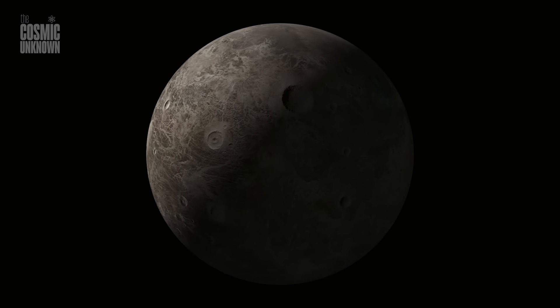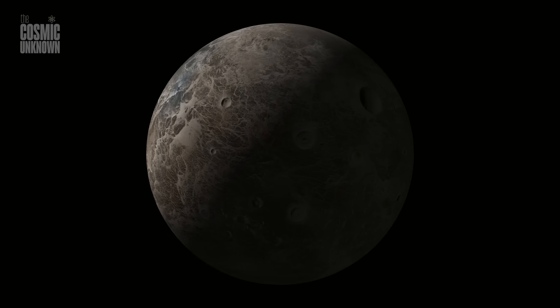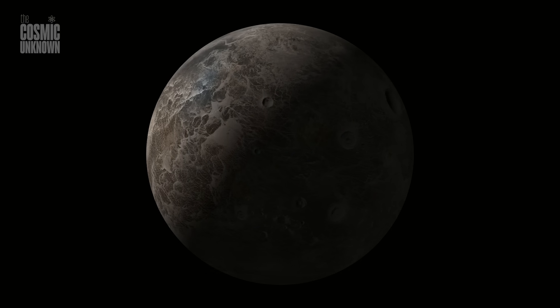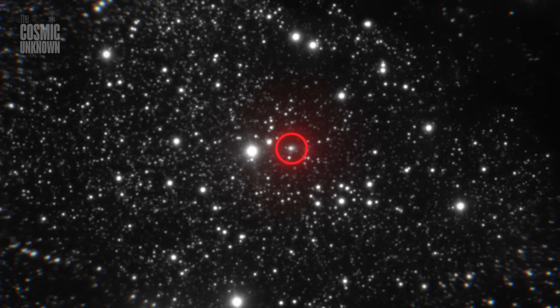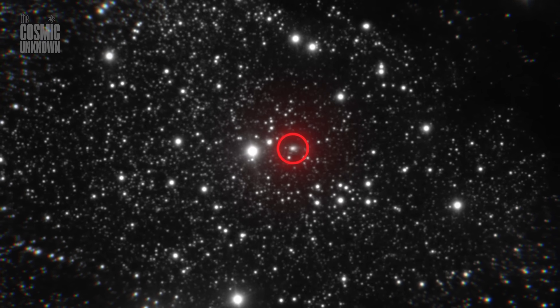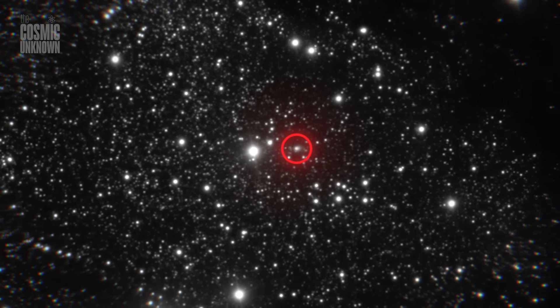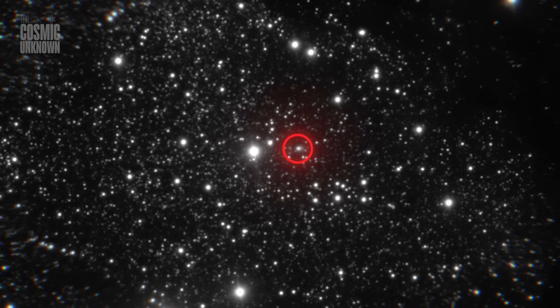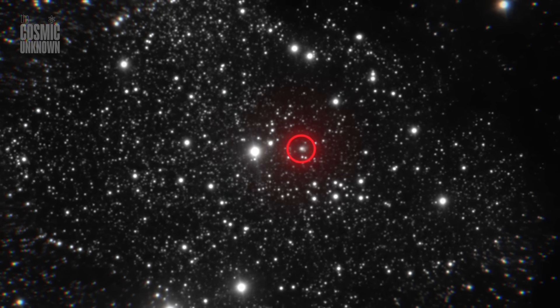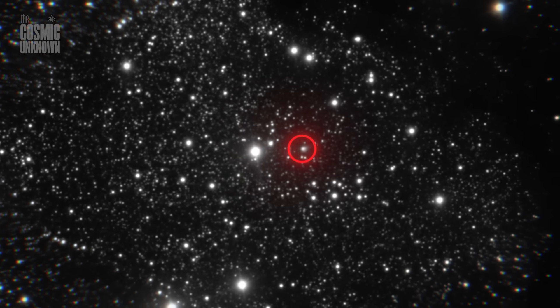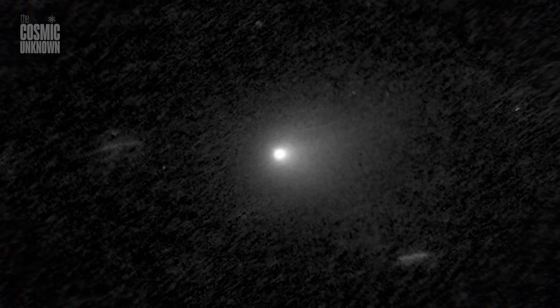It will reach perihelion, its closest point to the Sun, in late October 2025 at about 1.4 astronomical units. But during that period, it will be behind the Sun from Earth's perspective, effectively hidden from all ground-based telescopes. This observational blackout coincides with its most active phase, a critical moment just out of reach. But not entirely.